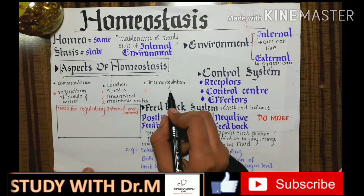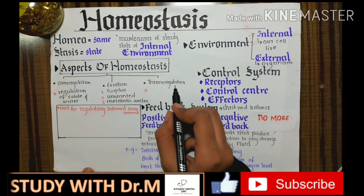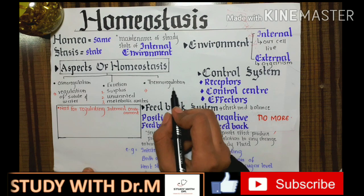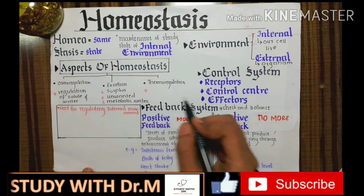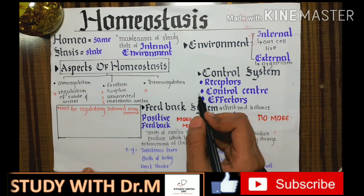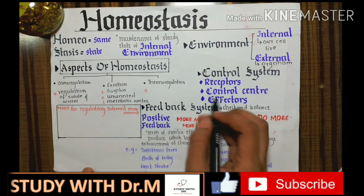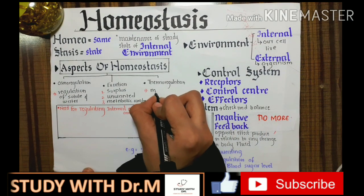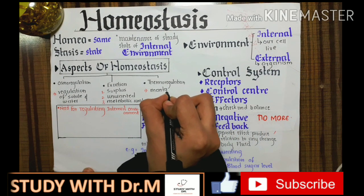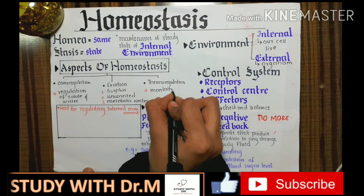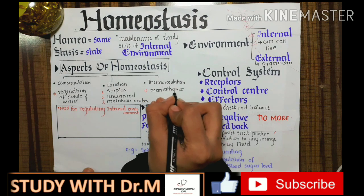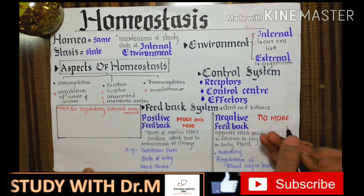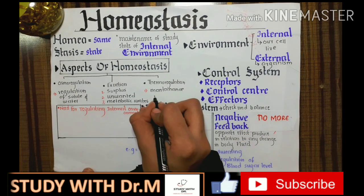The third aspect of homeostasis is thermoregulation. The name itself tells us it means the maintenance of body temperature up to a tolerable limit — whether we are in a sunny environment or a cold environment.